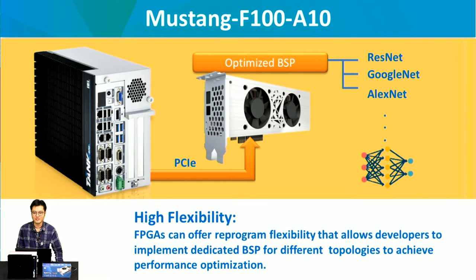Another feature is high flexibility. One advantage of FPGA is high flexibility. For the Mustang F100-A10, you can optimize the bitstream from the PCIe interface. For example, if you want to use the topology of ResNet, GoogLeNet, or SqueezeNet, it can optimize the bitstream for each different topology.